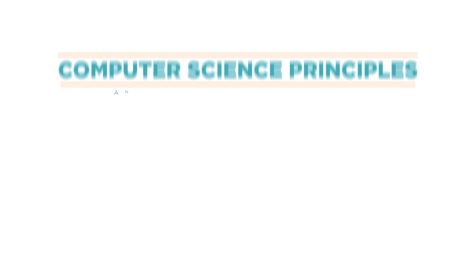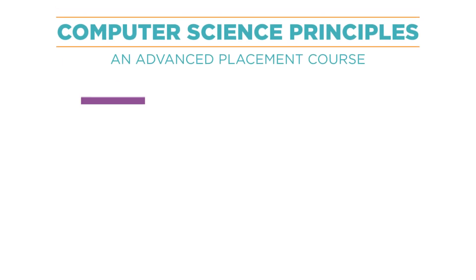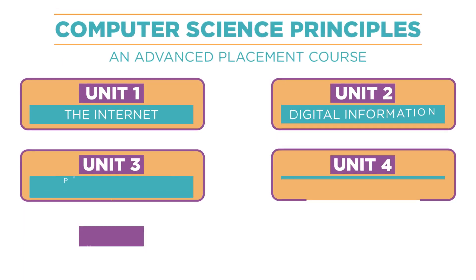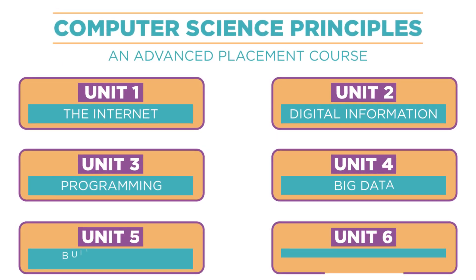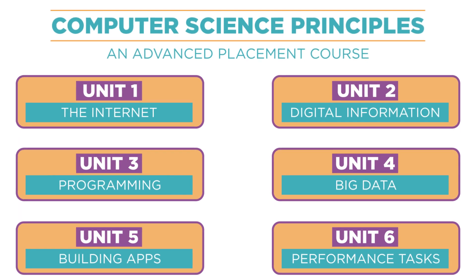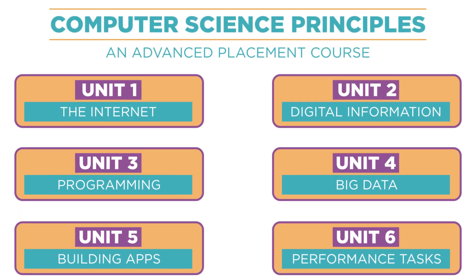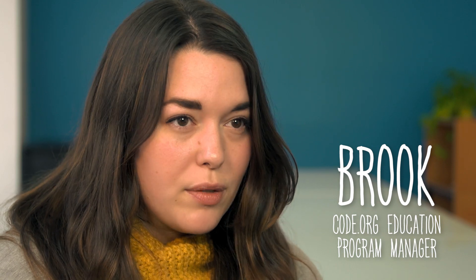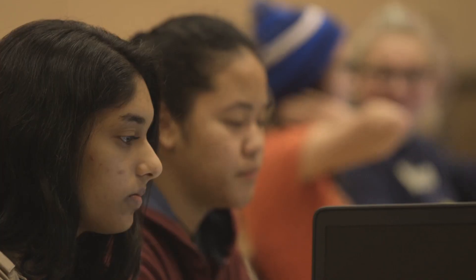CS Principles is an AP course that is an introduction to computer science, but it's designed to be broadly appealing and accessible. Part of that means breaking down stereotypes about what it means to be a computer scientist and what it means to be computer science.